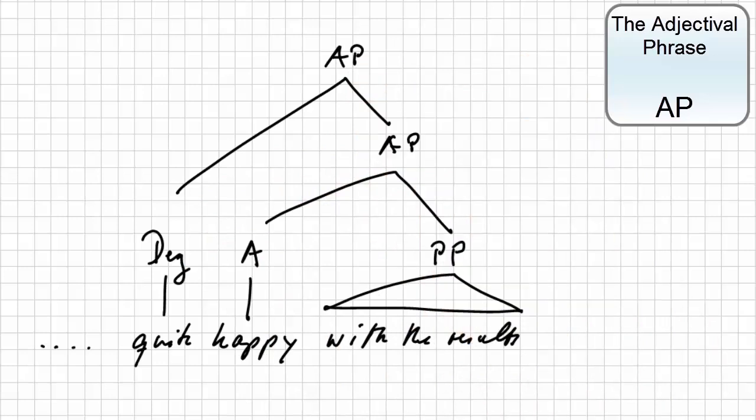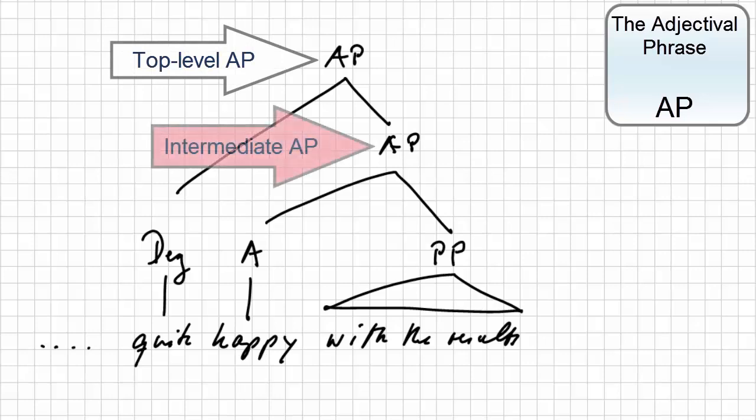As a result, we now have two adjectival phrases. The big one with a degree adverb as a modifier and the small one with a head and an optional extension.